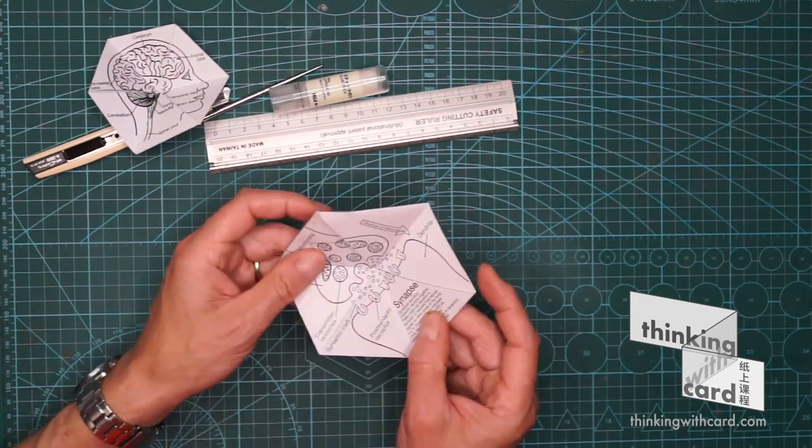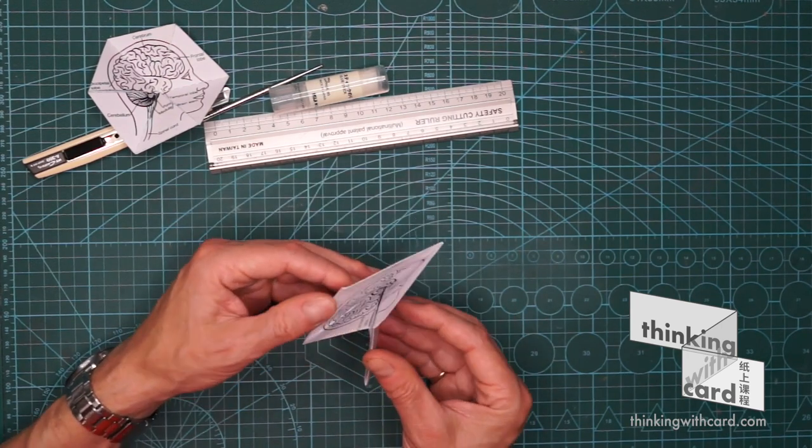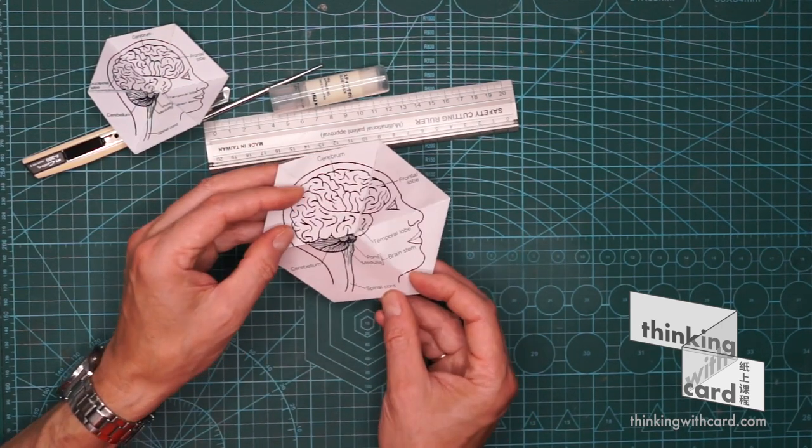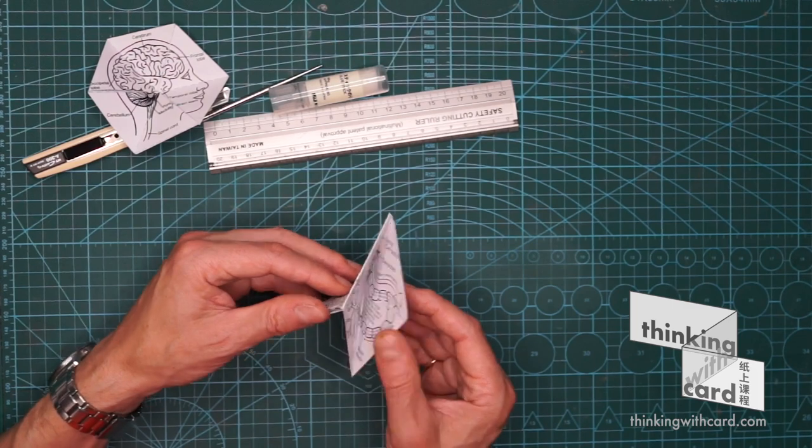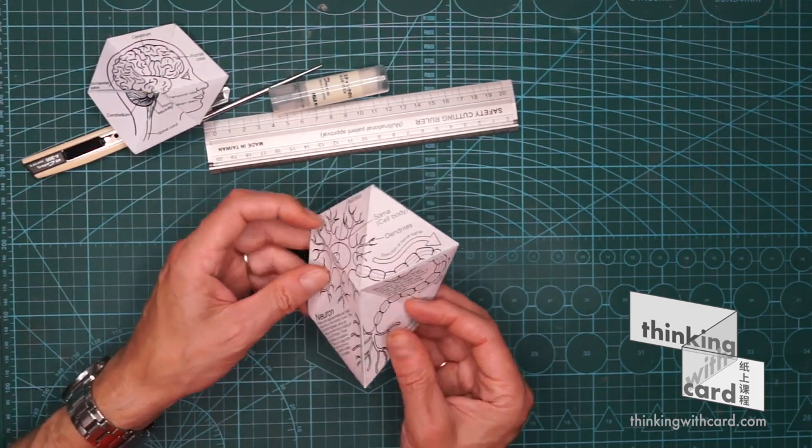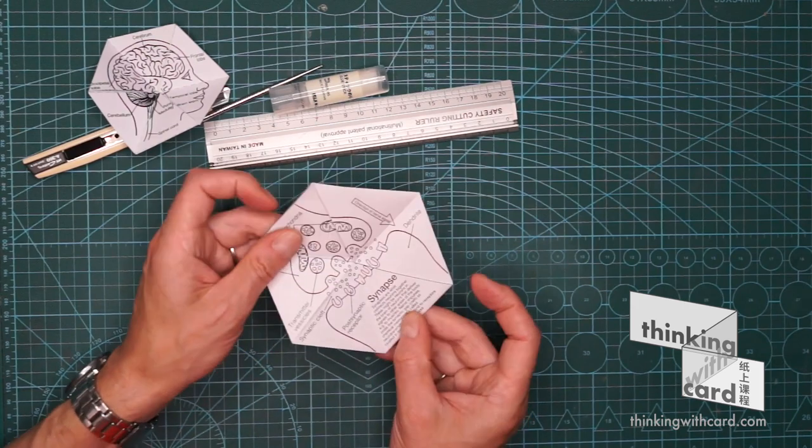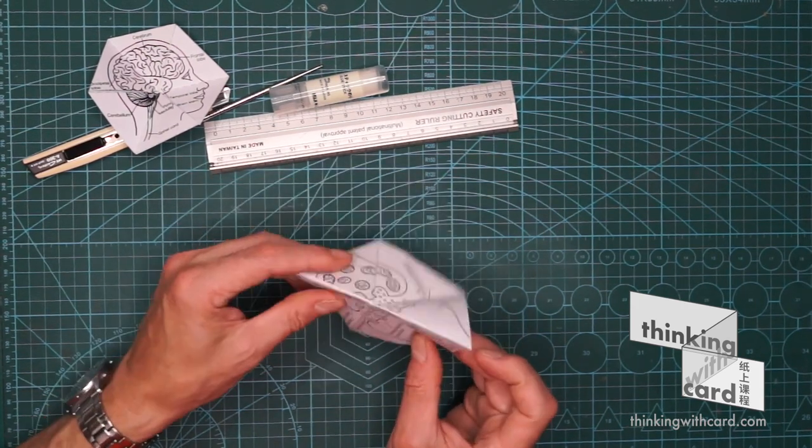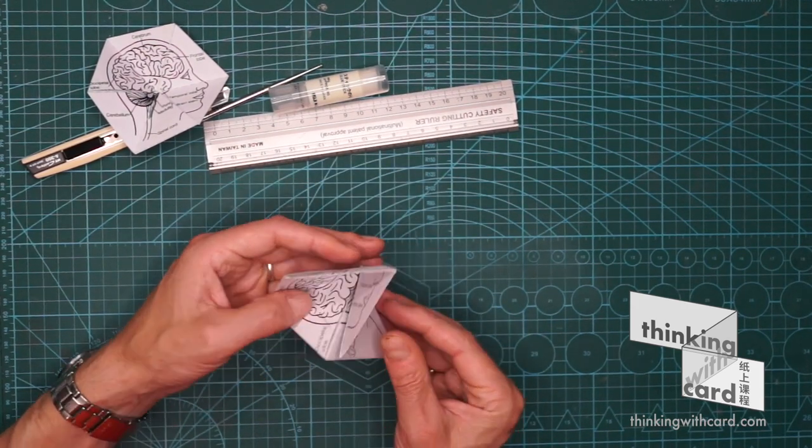And then it should open. So that's the first image, the brain. The second image, the neuron. The third image, the synapse. And then after that, we'll go back to the brain.